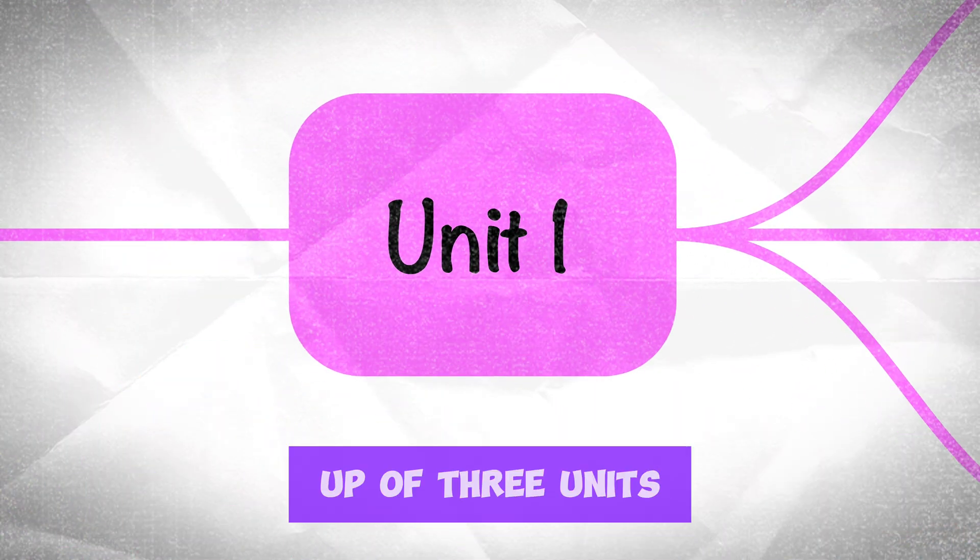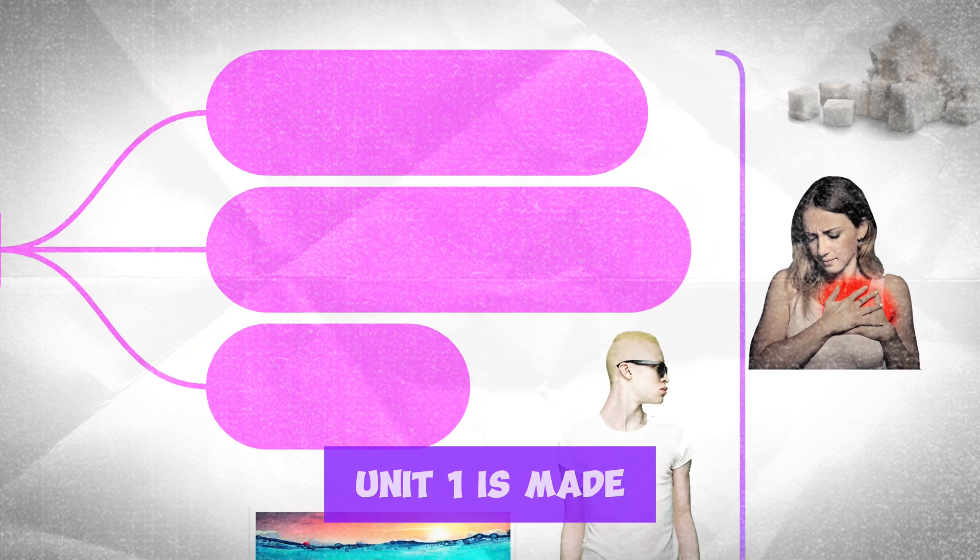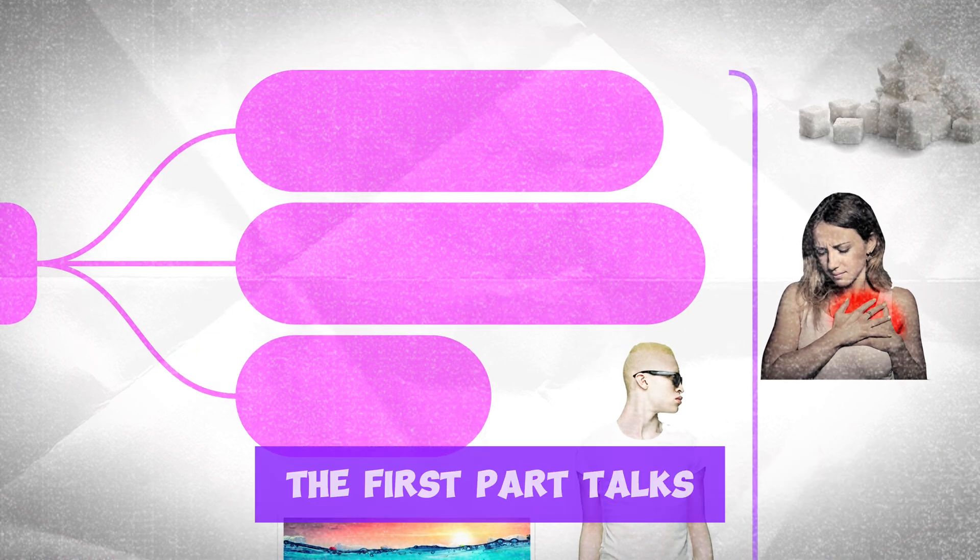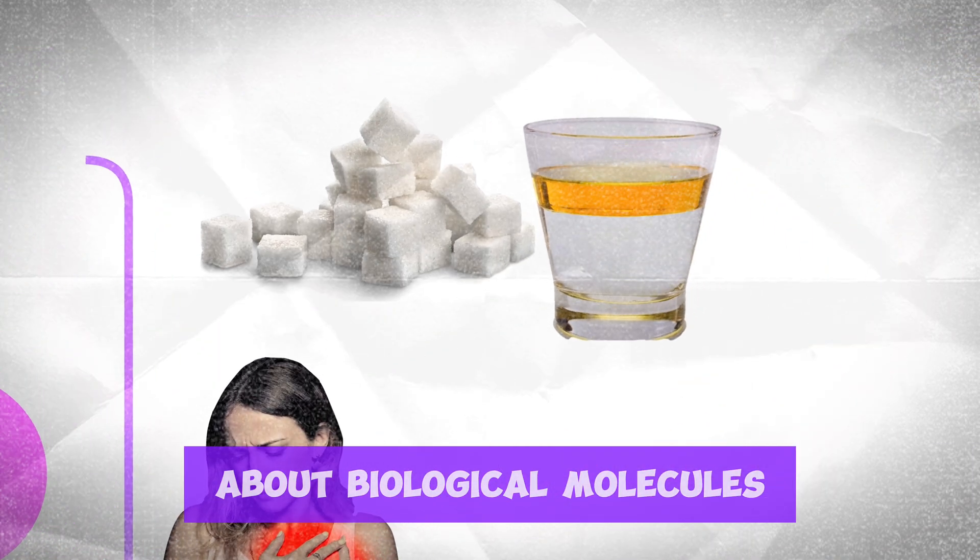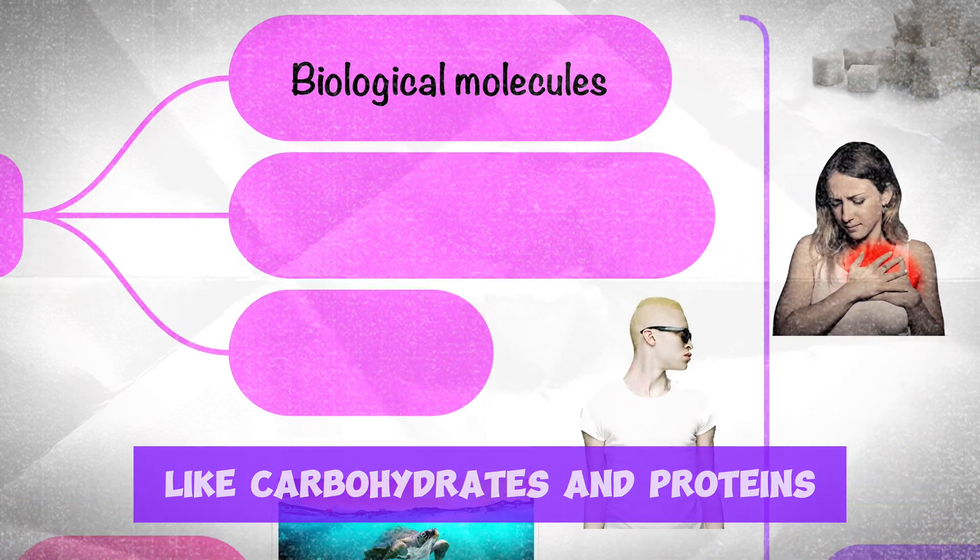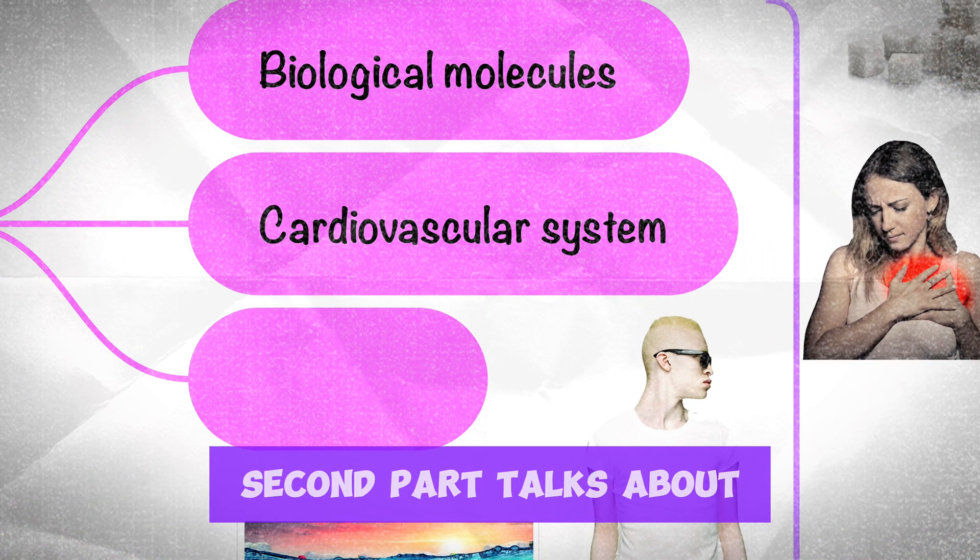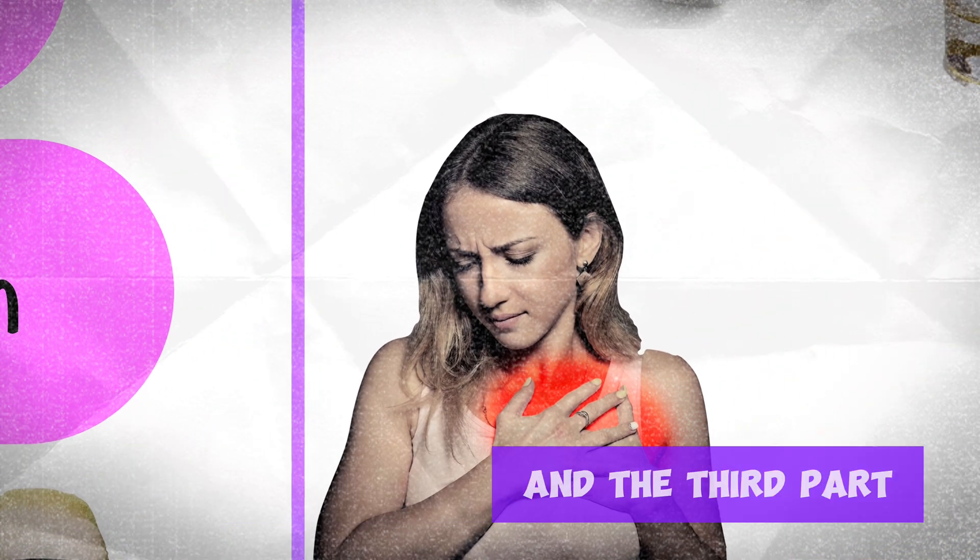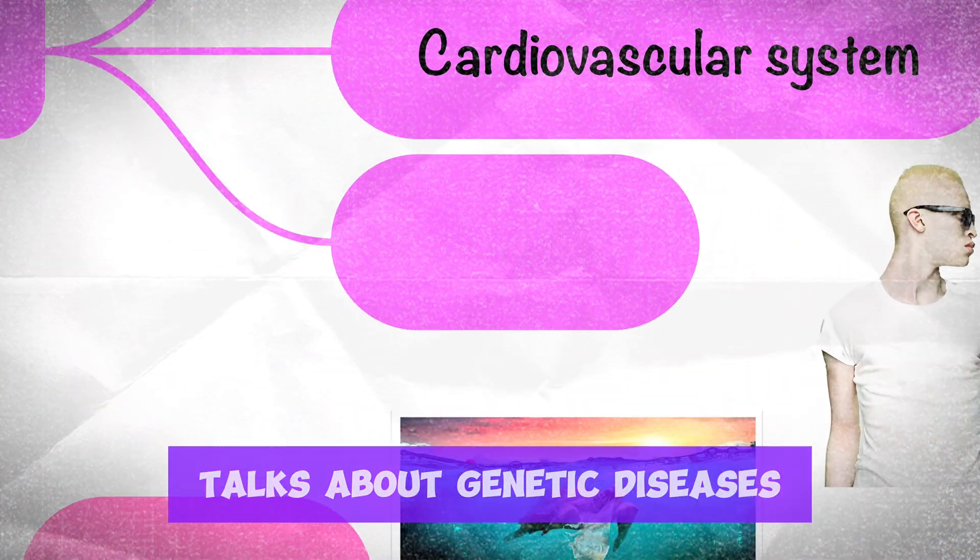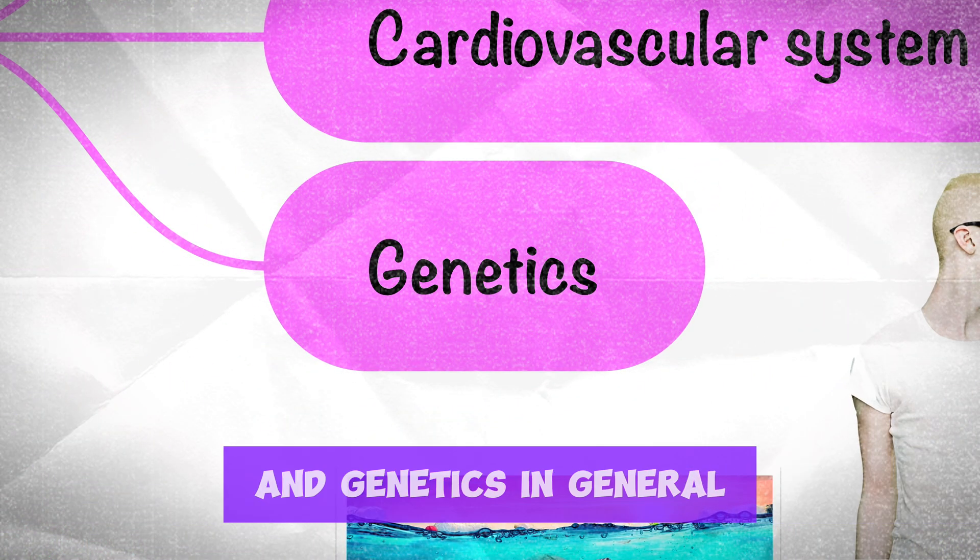AS biology is made up of three units. Unit 1 is made of three parts. The first part talks about biological molecules like carbohydrates and proteins. The second part talks about cardiovascular system and the third part talks about genetic diseases and genetics in general.